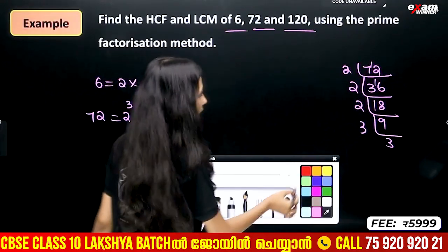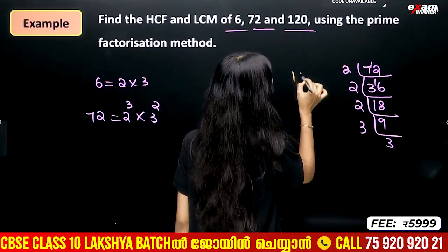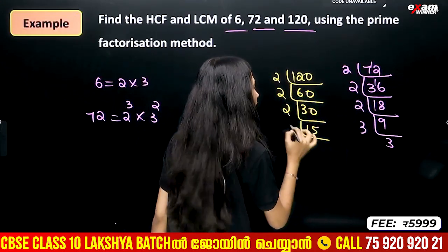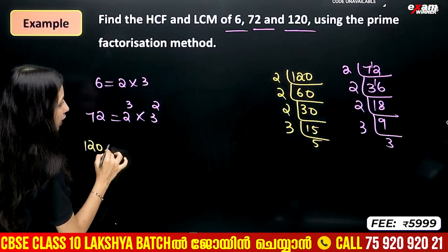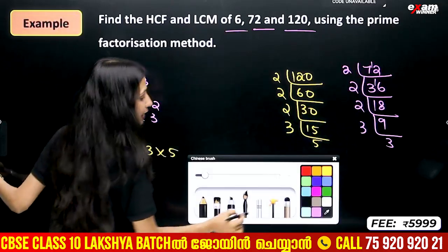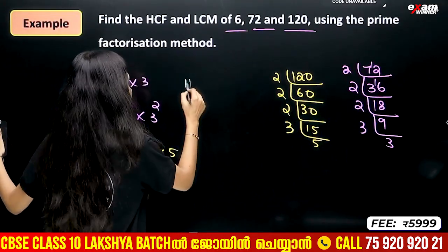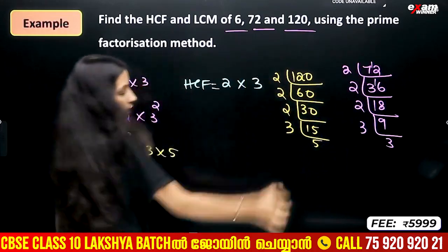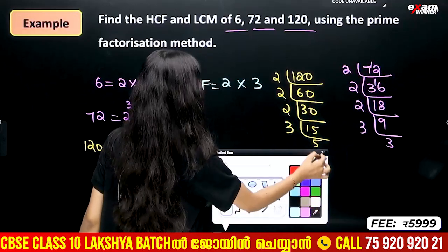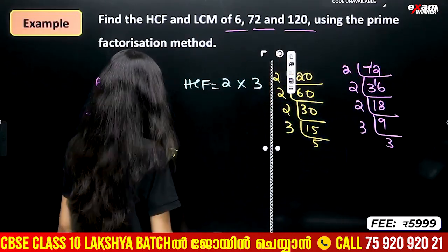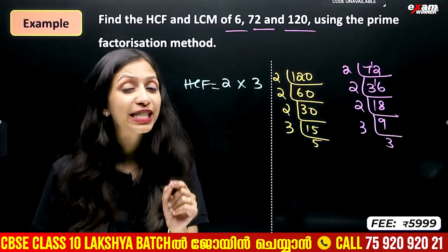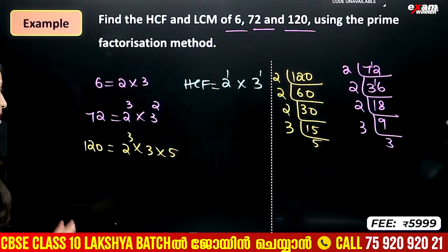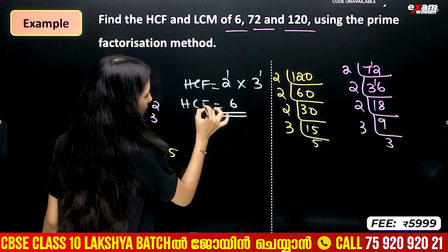Prime factorization of 120 is 2 cubed into 3 into 5. Now, for HCF, the common factors are 2 and 3. Taking their least powers: 2 to the 1 and 3 to the 1. So HCF is 6.